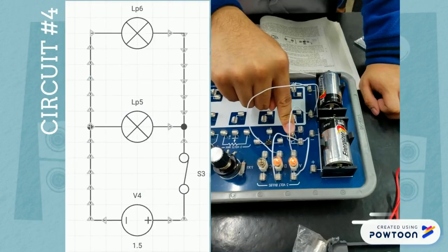The fourth circuit shows that when the two light bulbs were arranged in parallel, the intensity of light that the two light bulbs generate is brighter than when arranged in series as shown in circuit number 3.